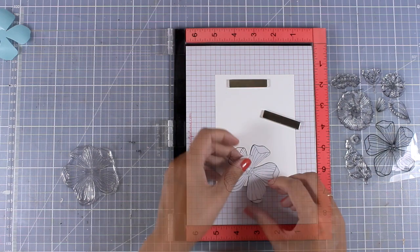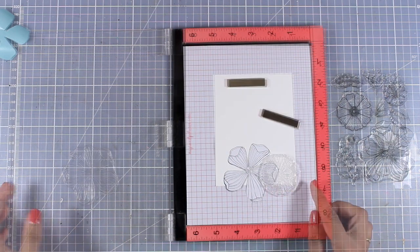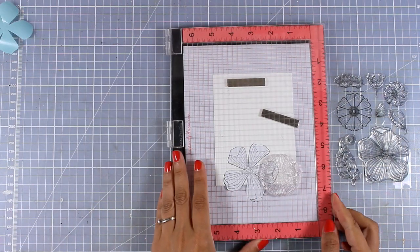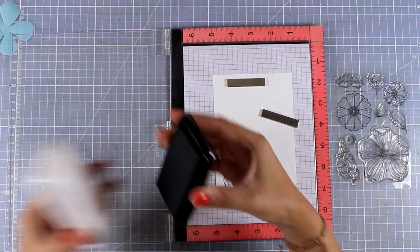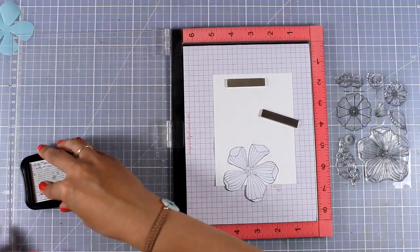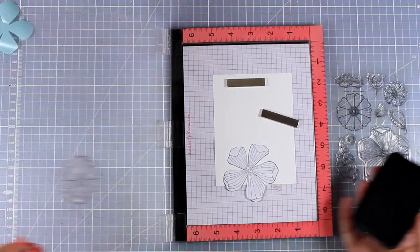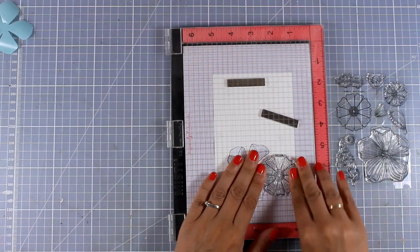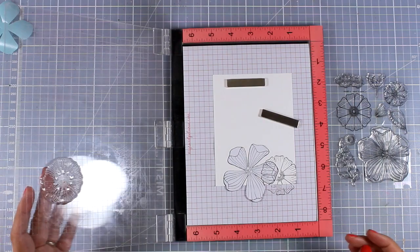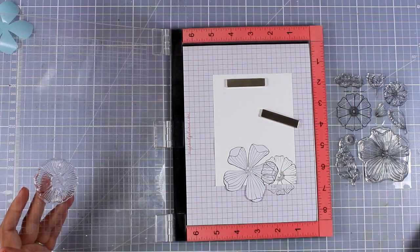And this is going to help you make masking even easier and you will not end up having gaps. Now, just because the mask is slightly raised, you will see that when I go ahead and stamp my next flower I will end up not stamping perfectly, but this is not a problem when you are using the Misti.